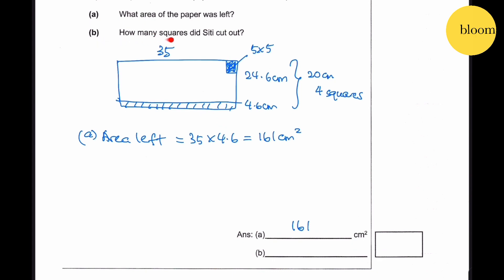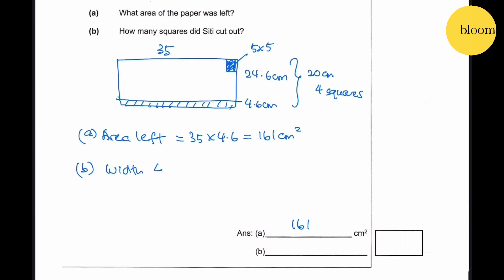Question 4b: How many squares did Siti cut out? Along the width it is 4 squares, and along the length it gives us 7. So the number of squares equals 4 × 7 = 28.